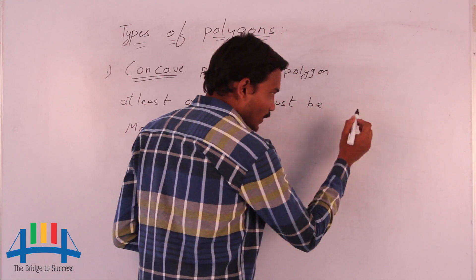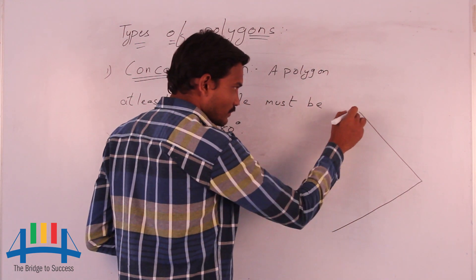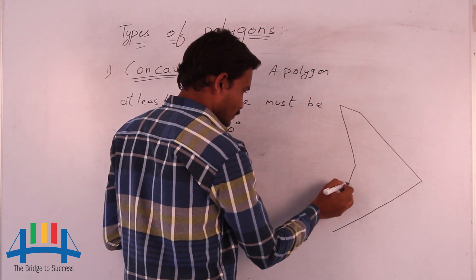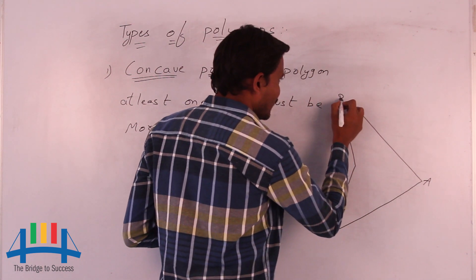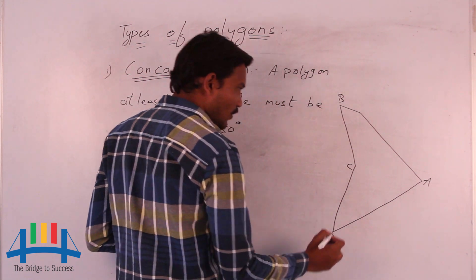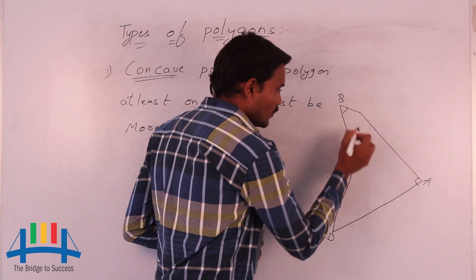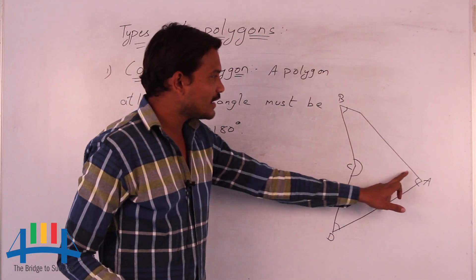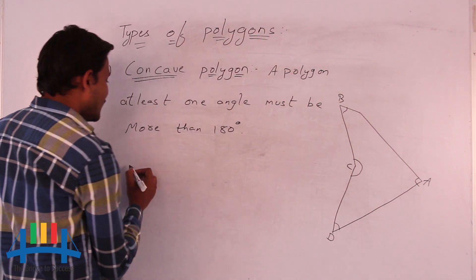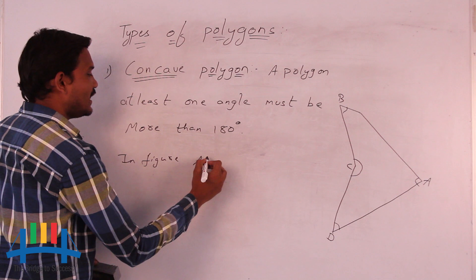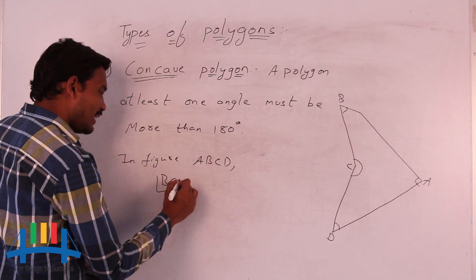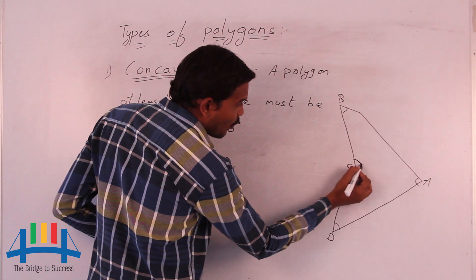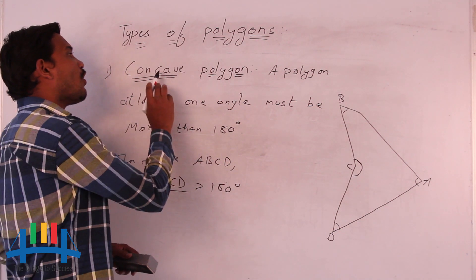I will represent this in a diagrammatic way. I am considering one polygon with vertices A, B, C, and D — four vertices and four angles. In polygon ABCD, three angles are less than 180 degrees, but if you observe angle BCD, it is more than 180 degrees. So such figures we call a concave polygon.